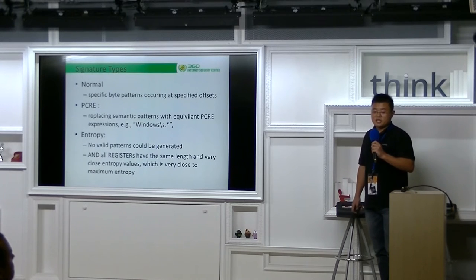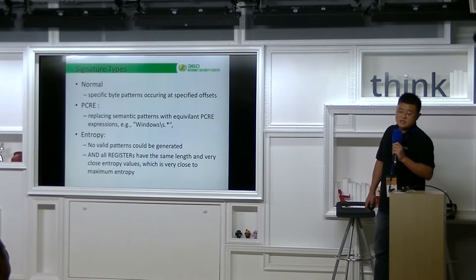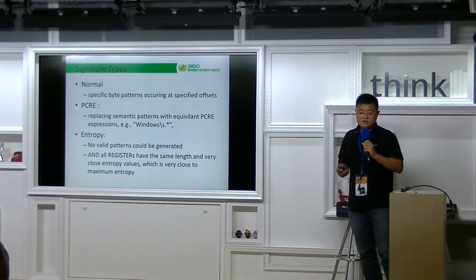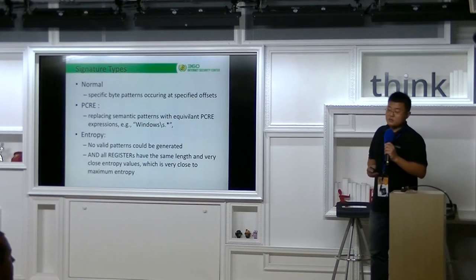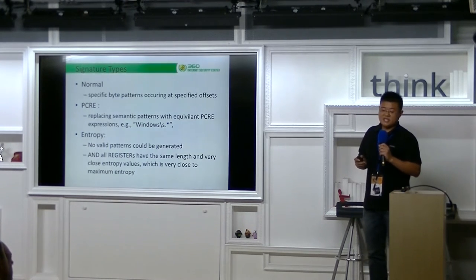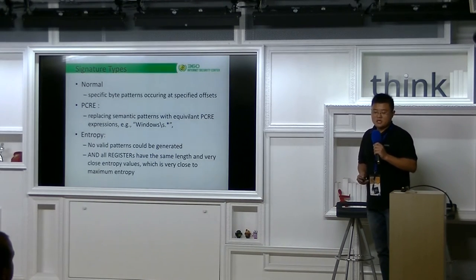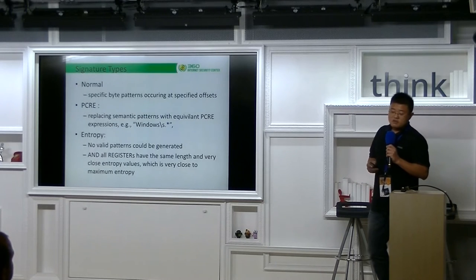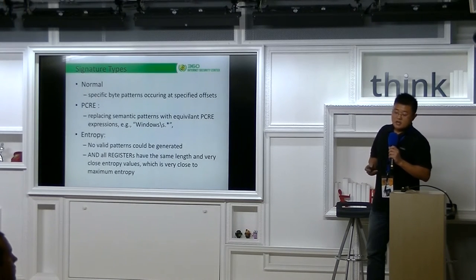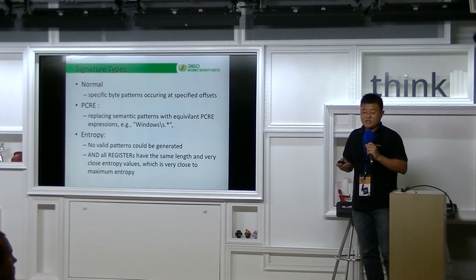Three types of signature are defined. The first is called normal. It just defines specific byte patterns occurring at specified offset. The second is called PCRE. It is produced by replacing the semantic patterns with equivalent PCRE expressions. The third is called entropy. It is used when no valid patterns could be generated, and all the registers have the same length and very close entropy values.